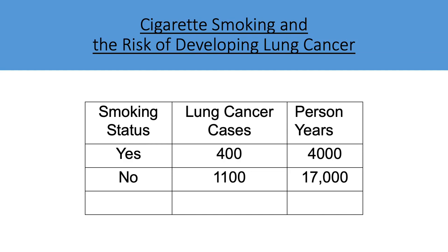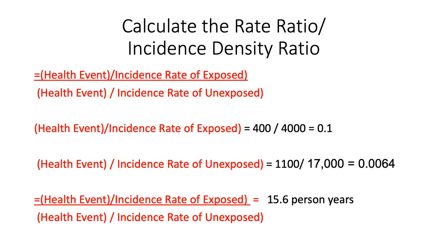This slide includes results from the practice problem. The title is Cigarette Smoking and the Risk of Developing Lung Cancer. On the left-hand part, you have the smoking status — also known as the exposure status — the lung cancer cases, and their person years. To calculate the rate ratio: the exposed rate is 400 divided by 4,000 person years. The unexposed incidence rate is 0.0064. When we divide both of these, we get 15.6 person years.